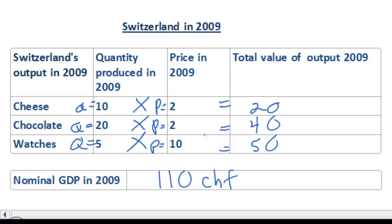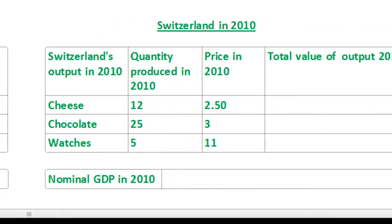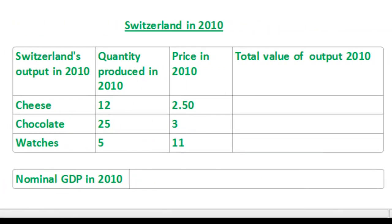This gives us the market value of Switzerland's output in the year that the output was produced. But let's look at 2010 and see what happened to the nominal GDP of Switzerland, and then we'll see why nominal GDP is somewhat an inferior measure of the actual output of Switzerland between these two years.